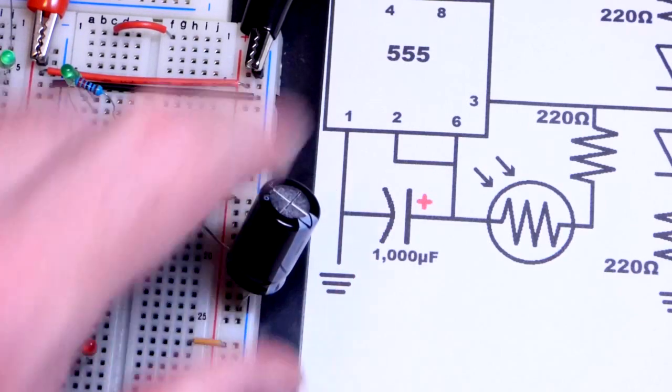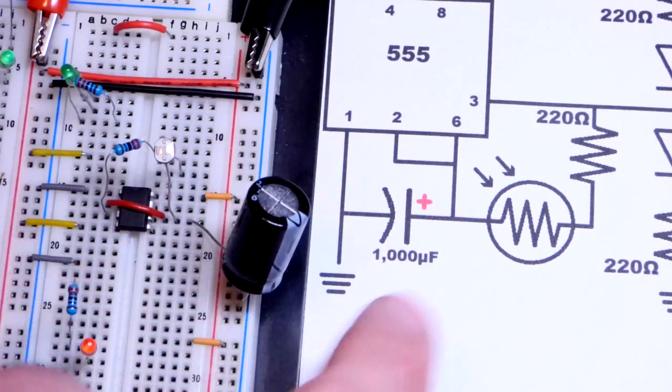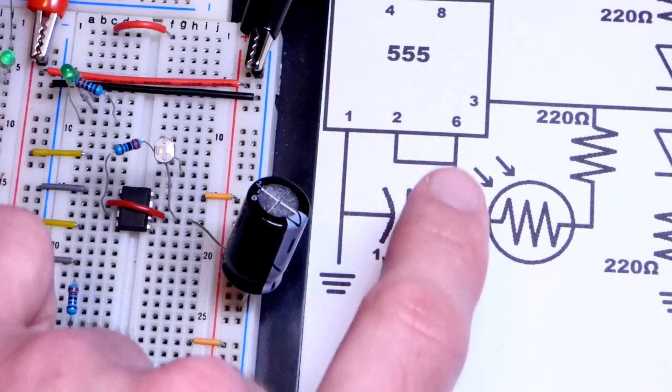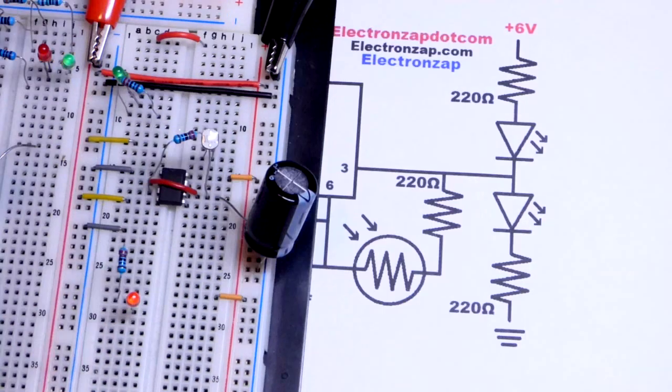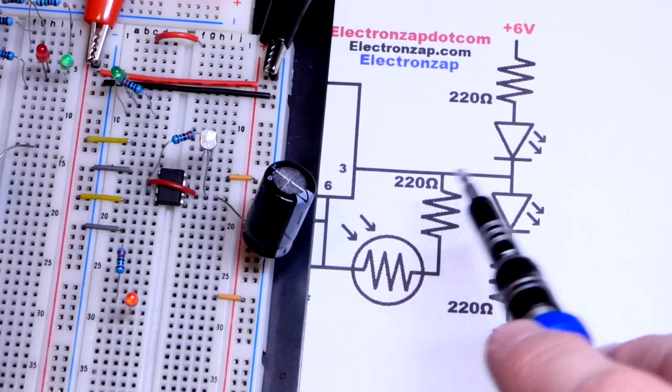Make sure the negative side of it, it's polarized, goes to the negative rail. And then we put the positive side of it to that node right there where everything connects.